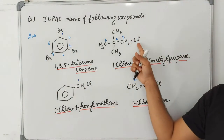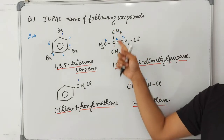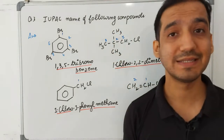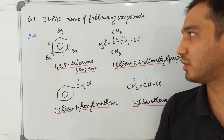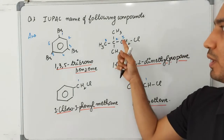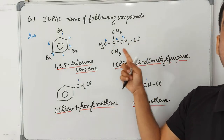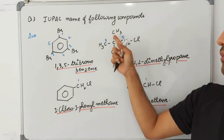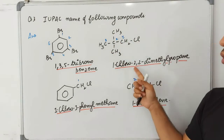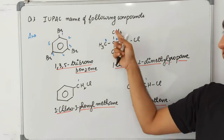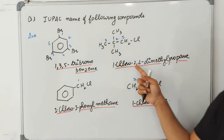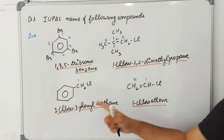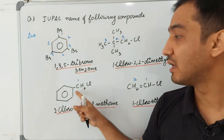In the next compound, chlorine is attached and there are two methyl groups. You always take the longest chain and give the lowest number to substituents. Numbering from the end where chlorine comes first (alphabetical order: C before M), you get 1-chloro-2,2-dimethylpropane.